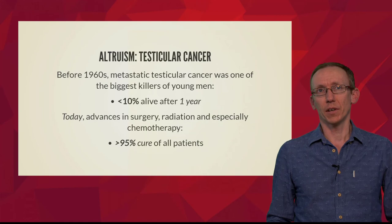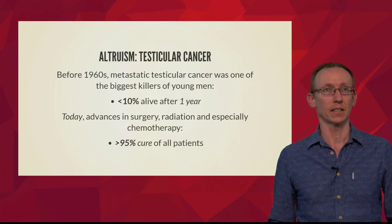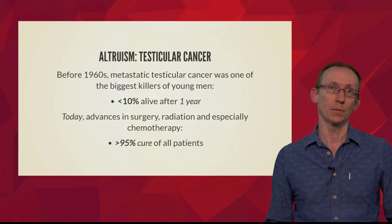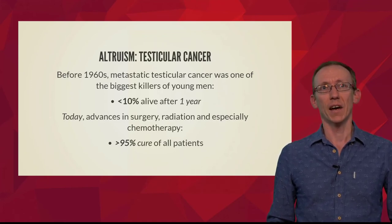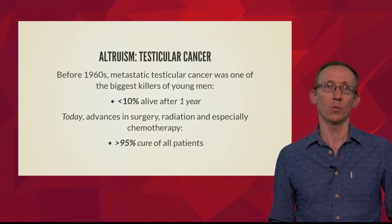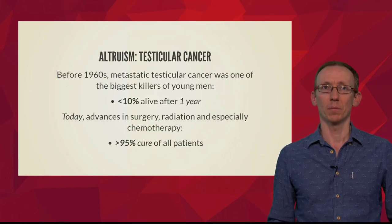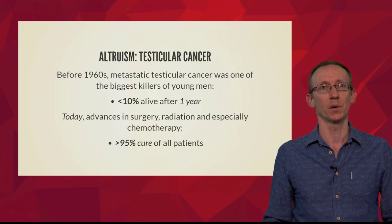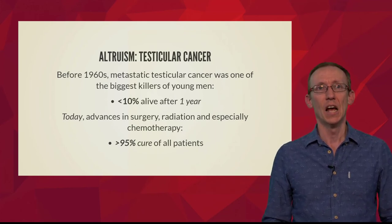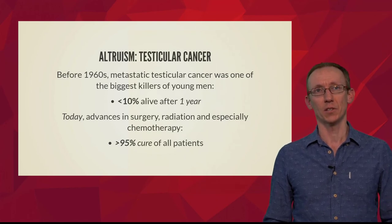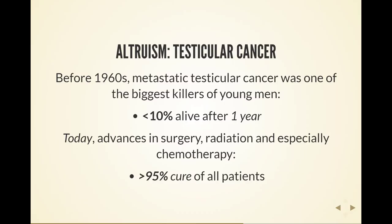Altruism in drug discovery can also be seen in testicular cancer. Before the 1960s, metastatic testicular cancer was one of the biggest killers of young men - survival was less than 10% after one year. It's an incredibly aggressive disease. However, it's also now one of the most treatable diseases with modern chemotherapy. With advances in chemotherapy, surgery, and radiation, over 95% of patients with the disease are cured - meaning no relapse after 5 or 10 years. That's really helped millions of young men around the world.